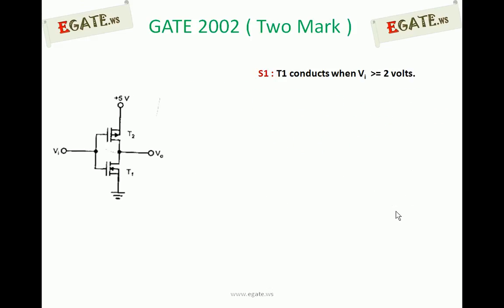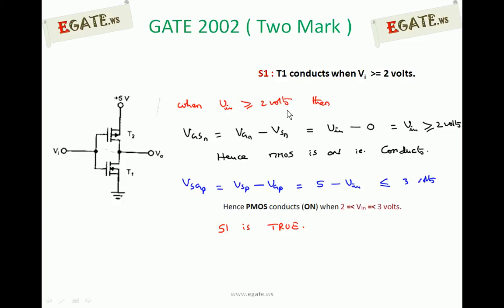Now consider Statement 1: T1 conducts when VI is greater than or equal to 2 volts. VI is the input voltage applied to both gates of T1 and T2. For NMOS, VGSN equals VGN minus VSN. VGN is the gate of the NMOS transistor, which is V input. VSN is the source of the NMOS, which is grounded, so it is 0. Therefore VGSN equals V input, which is greater than or equal to 2 volts, so NMOS is definitely conducting.